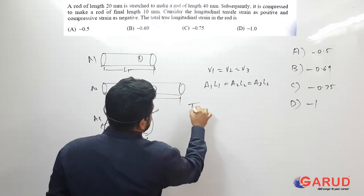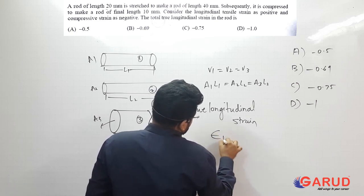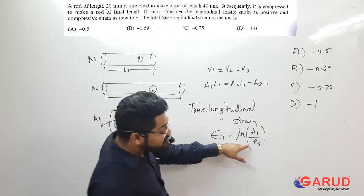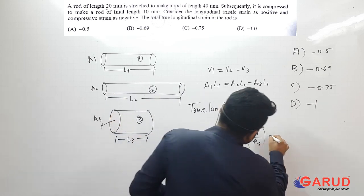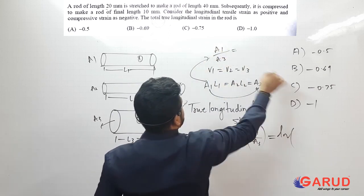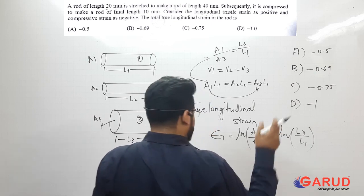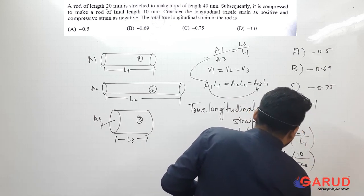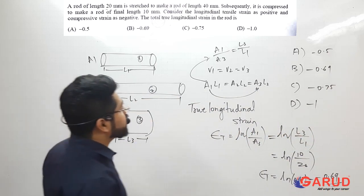They are asking for true longitudinal strain. The formula for true longitudinal strain εT = ln(A1/A3) = ln(L3/L1), since volume is constant and A1·L1 = A3·L3. Substituting: εT = ln(L3/L1) = ln(10/20) = ln(0.5) = −0.69. The answer is option B: −0.69.